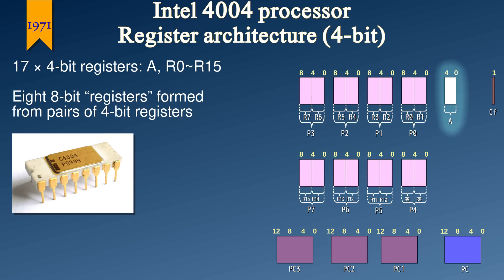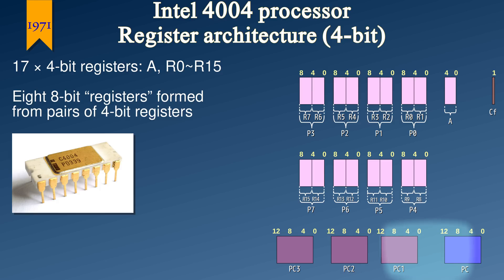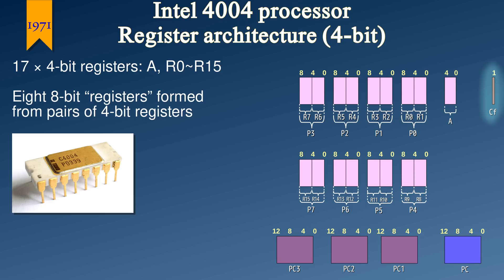It also had a special accumulator register. The CPU would perform most of its operations on the accumulator, but the index registers could store intermediate values without having to transfer data between the RAM and the CPU. The 16 4-bit registers could also be treated as 8 pairs of registers, each pair being 8 bits wide — in other words, you had 8 8-bit registers, and the lower and upper halves of each register could be accessed separately. There was also a 12-bit program counter called PC, and three other program counters. These four program counters would form a stack, so that you could do function calls. Finally, there was also a single-bit carry flag.